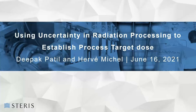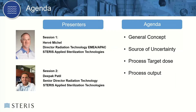Thank you, Ashley. As Ashley mentioned, I'm Deepak Patil, the Senior Director of Radiation Technology at Steris AST. I'm partnering this presentation with my colleague Hervé Michel, who's based in Europe — he had a tech talk this morning he completed. The agenda for today's tech talk is that we will go through some general concepts of uncertainty, target dose, and process variation. We'll also discuss the sources or components of uncertainty, what is process target dose and how to set it, and finally we'll look at output to the process.